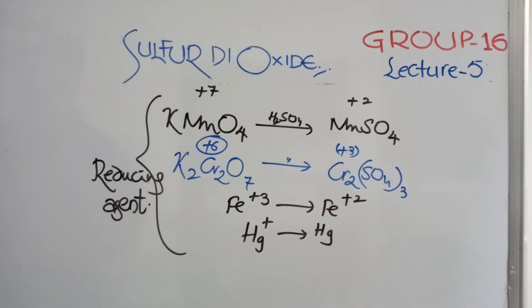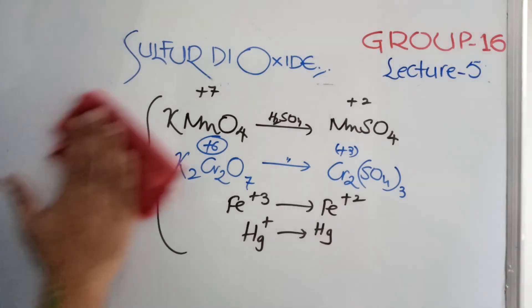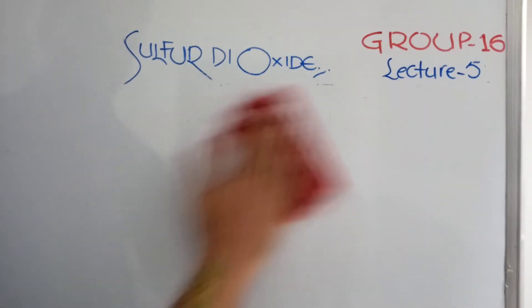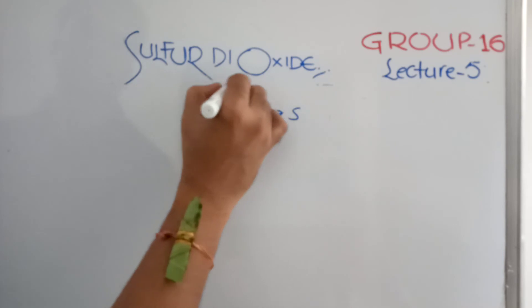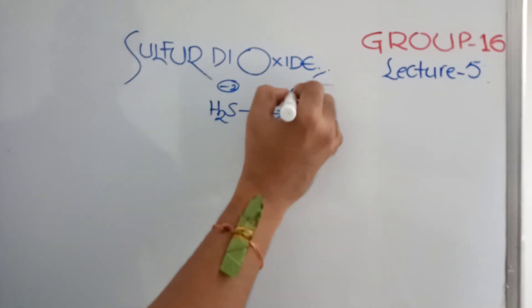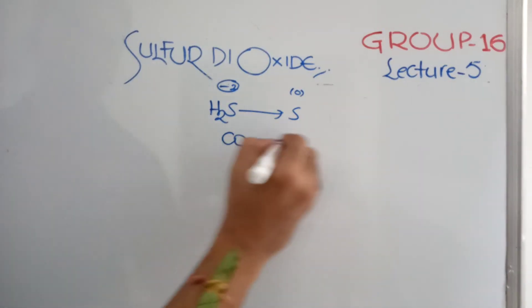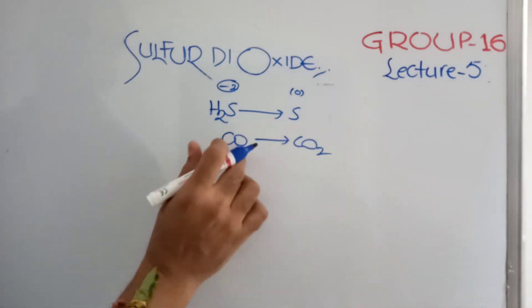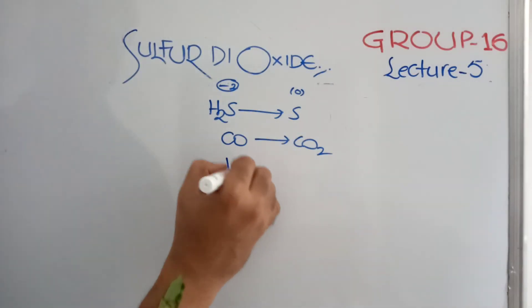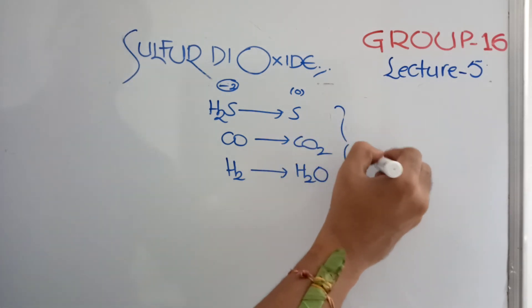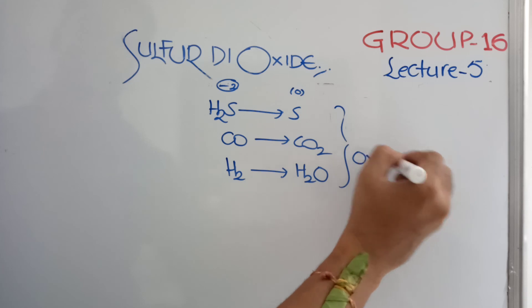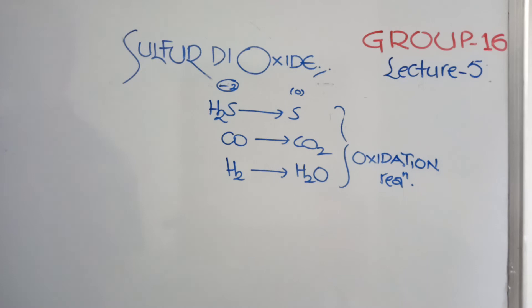Sulfur dioxide is an oxidizing agent also. We will see some reactions of oxidation. H2S is oxidized to sulfur. Oxidation state minus 2 to 0. Carbon monoxide is oxidized to carbon dioxide. You can see directly when oxygen is increased here. Hydrogen is oxidized to water. All these you can say oxidation reactions. Sulfur dioxide is oxidizing all these.